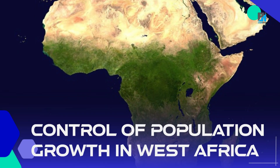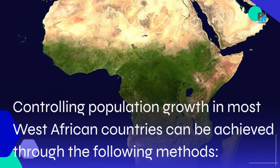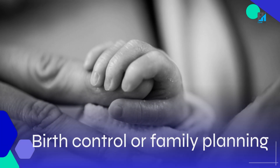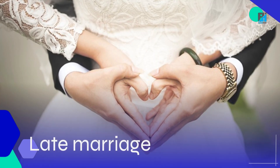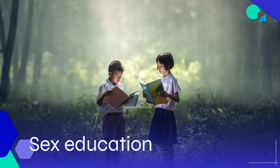Control of population growth in West Africa. Controlling population growth in most West African countries can be achieved through the following methods: birth control or family planning, child quota, late marriage, strict migration policies, and sex education.